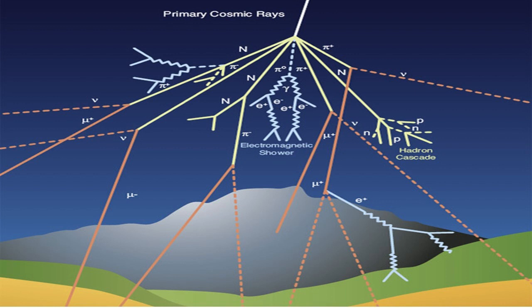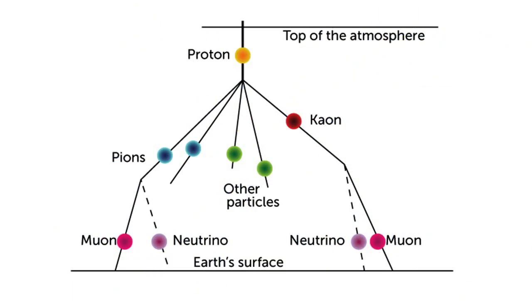It would seem that muons formed in the upper layers of the atmosphere, at over 15,000 meters high, could not reach the Earth's surface due to their short lifespan.